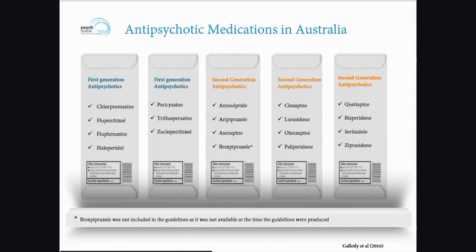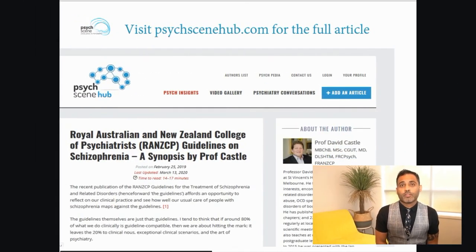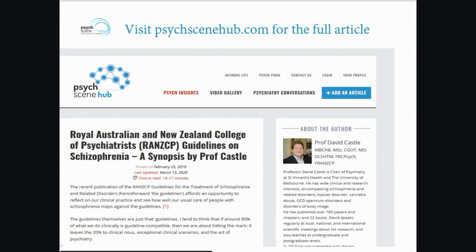These are the range of antipsychotic medications available in Australia. Brexpiprazole was not included in the guidelines as it wasn't available when the guidelines were produced. The key factor to consider when choosing a first-line antipsychotic is metabolic burden, side effects, tardive dyskinesia, and prolactin elevation, as that will influence recovery in the long term. If you want to read the full article, visit psychscenehub.com and search for RANZCP Guidelines Schizophrenia.